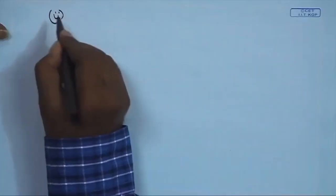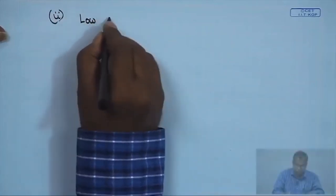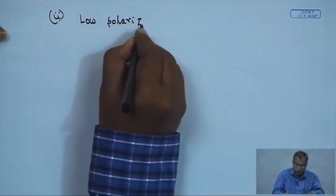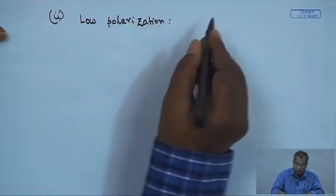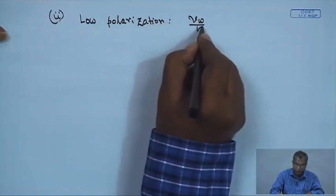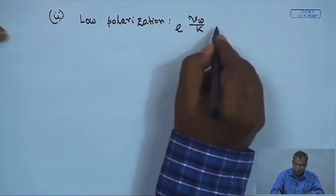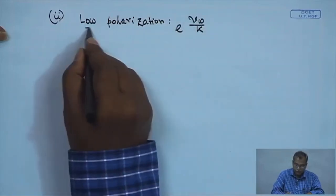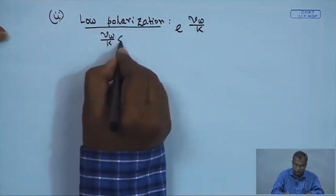Welcome to this session. We are looking into some simplified versions of osmotic pressure control filtration. We have looked into the first simplified case of no concentration polarization. The second simplified case is low polarization, which can be realized when V_w divided by k is much less than 1.